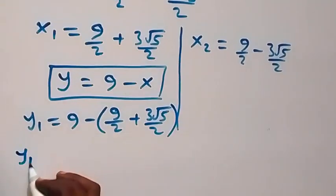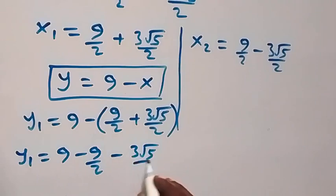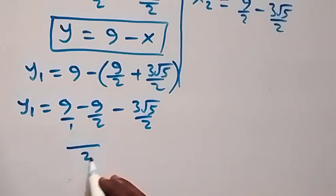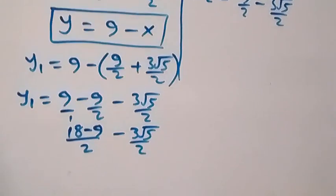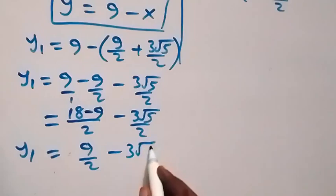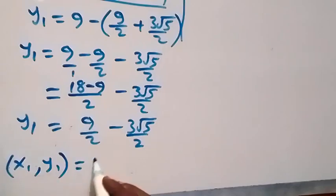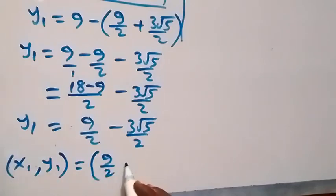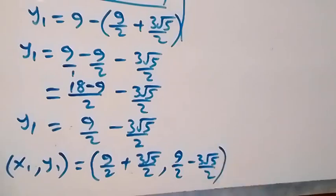Opening the bracket, we have y1 equals to 9 minus 9 over 2, then minus 3 root 5 over 2. Bringing this together with denominator 2, that gives us 18 over 2 minus 9 over 2, minus 3 root 5 over 2. So y1 equals to 9 over 2 minus 3 root 5 over 2. Therefore the first solution set (x1, y1) is: 9 over 2 plus 3 root 5 over 2, and 9 over 2 minus 3 root 5 over 2.